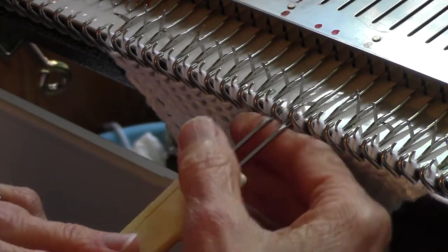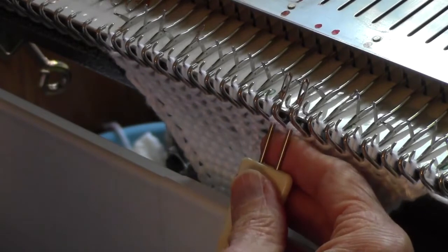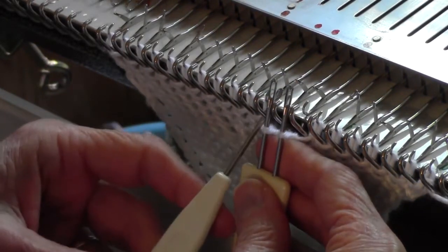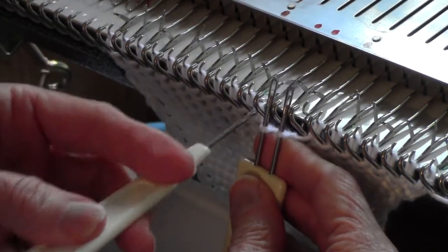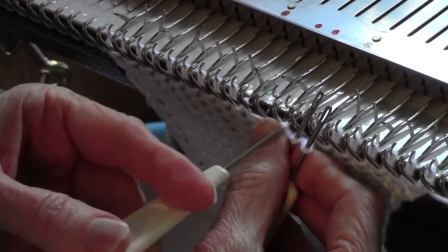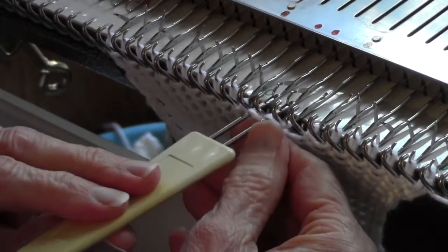So the rightmost two stitches go on this double and then that one to the left of them goes on the single. The single gets put down first then the double.